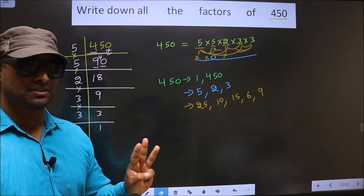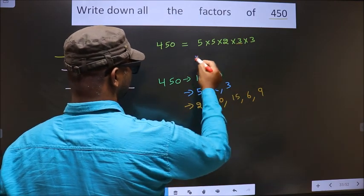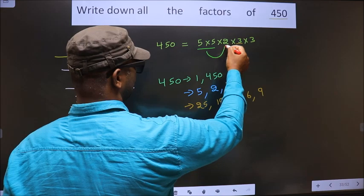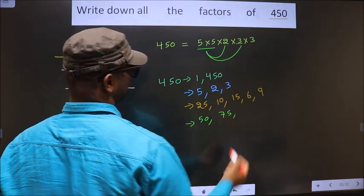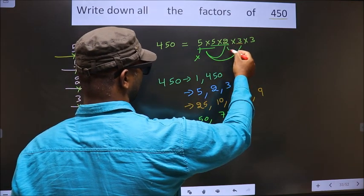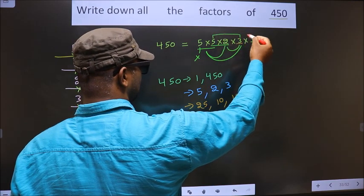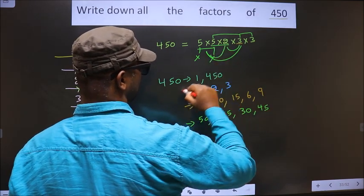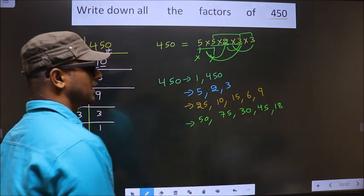Now take the combination of 3 numbers. First fix 5 × 5 = 25, combine with 2: 25 × 2 is 50. Now combine with 3: 25 × 3 is 75. Now fix 5 × 2 = 10, combine with 3: 10 × 3 is 30. Now 5 × 3 = 15, combine with 3: 15 × 3 is 45. Now take 2 × 3 = 6, combine with 3: you get 18. No other combinations possible.